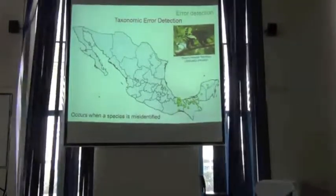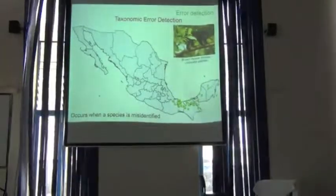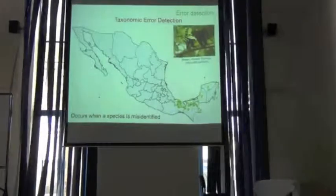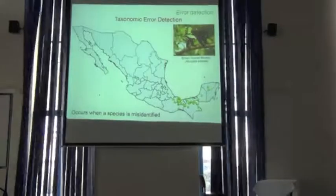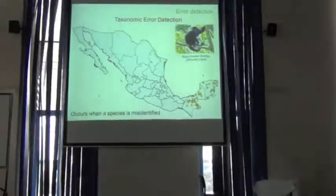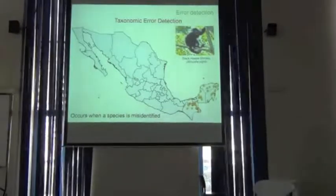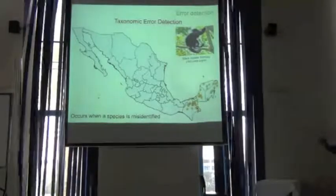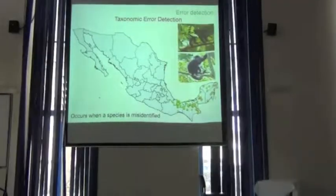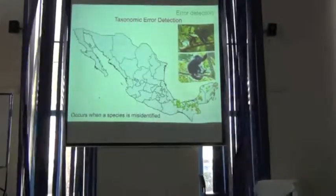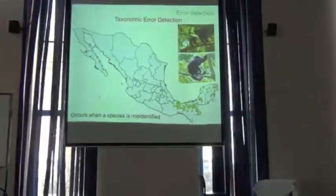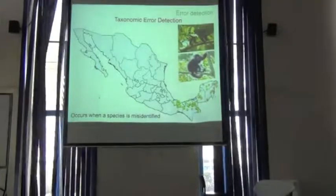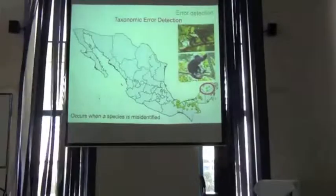Another type of error is the taxonomic error — when you misidentify the species you are working with. For example, we have a brown color monkey from Mexico. There is another species of monkey in Mexico, the black one. They have a southern distribution in Mexico, but there are areas of exclusive distribution for each species. We know for sure that the brown howler monkey does not live in this particular state of Mexico, so we know these two records are misidentified.